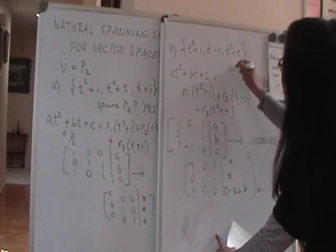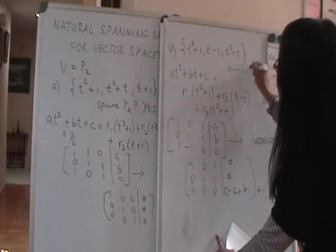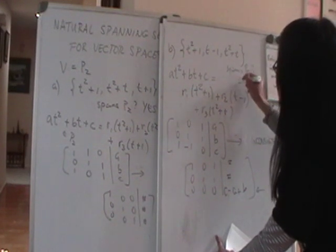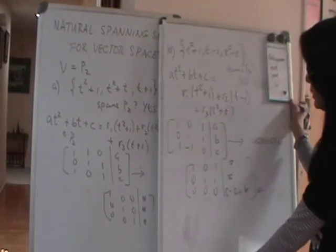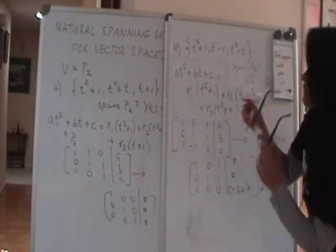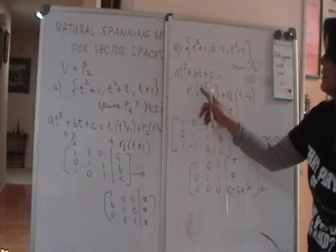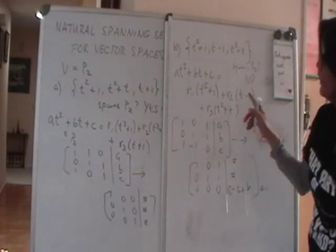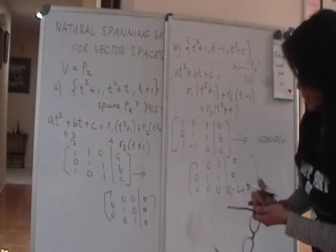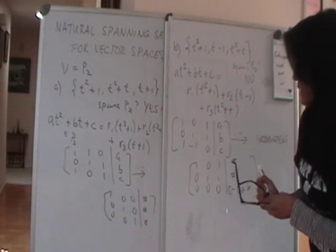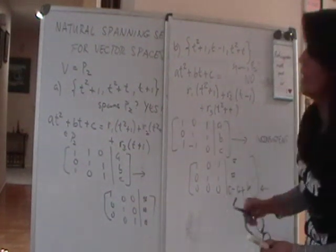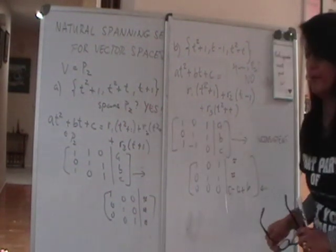That bad row means we have an inconsistent system. The answer to the question 'does this set span P₂?' is no — it is not possible to find real numbers r₁, r₂, r₃ such that when you form the linear combination you get an arbitrary polynomial at²+bt+c in P₂. That's a recap of how to check whether a given set of vectors spans a vector space.